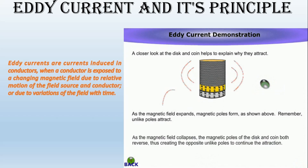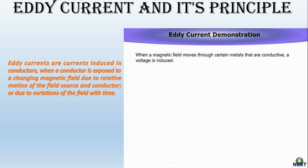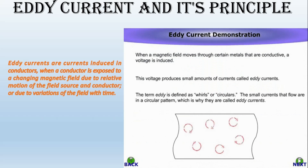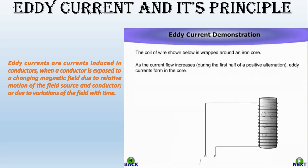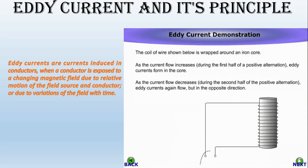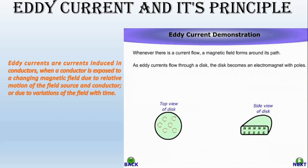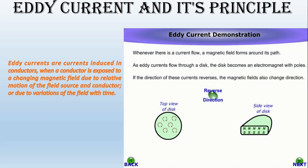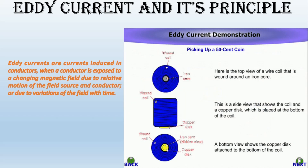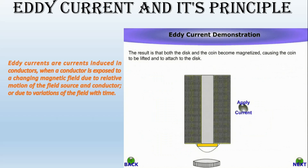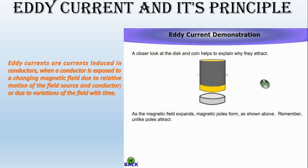Now we will see the applications of eddy current. First, magnetic levitation: it is a repulsive type of levitation and finds application in modern high-speed maglev trains to provide frictionless transportation. The changing magnetic flux produced by a superconducting magnet placed on the moving train produces eddy currents on the stationary conducting sheet over which the train levitates. The eddy currents interact with the magnetic field to produce forces of levitation.